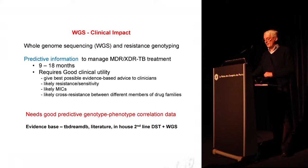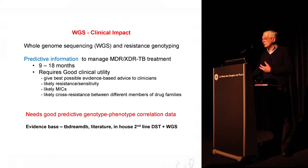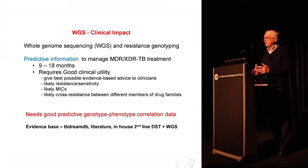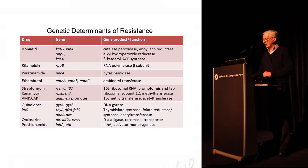Underpinning this whole approach is the need for an extremely predictive genotype-phenotype correlation dataset. Without that, just looking for SNPs in individual strains is compromised. Currently, the evidence base for phenotype-genotype correlation is based upon a slightly outdated database called the DrugTB database, available on the internet, through the literature — which is very extensive but needs a lot of interrogation — and also through in-house first and second line susceptibility testing linked to the determination of SNPs through whole genome sequencing.